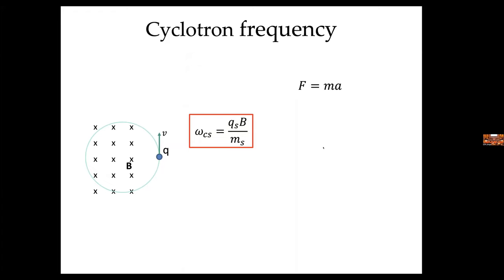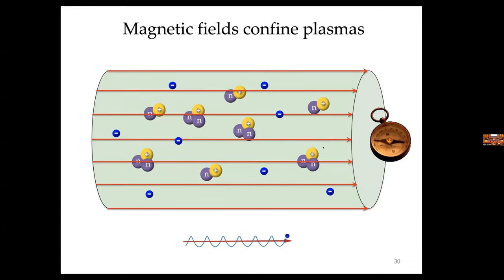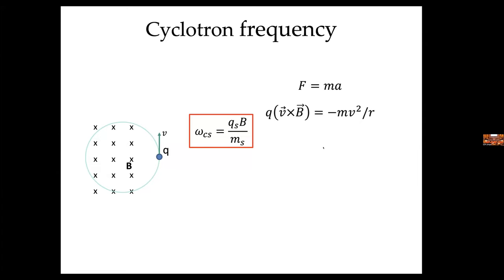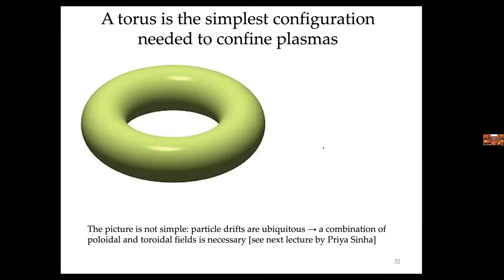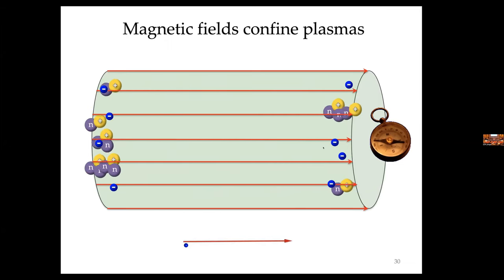The cyclotron frequency is the frequency of gyration around the magnetic field — 2π over the time it takes for a particle to complete one circle. From Newton's second law, we balance the Lorentz force against the centripetal force, and with minimal manipulation we get the cyclotron frequency: charge times the magnetic field divided by the mass.